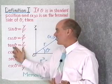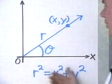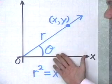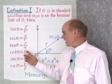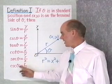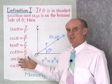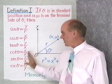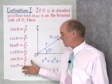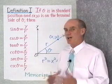cos θ is x over r, tangent θ is y over x, where x, y, and r are shown in the diagram. Cotangent θ is x over y, secant θ is r over x, cosecant θ is r over y. As we'll see in the next section, there are identities we can use to find these three trigonometric functions if we're given the first three.